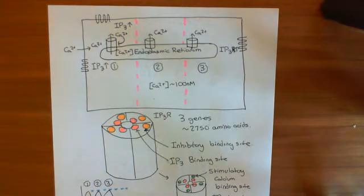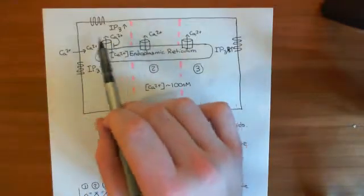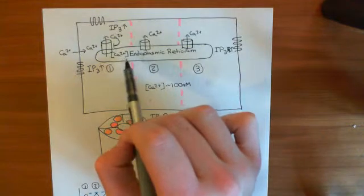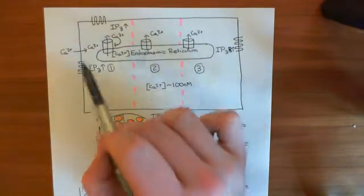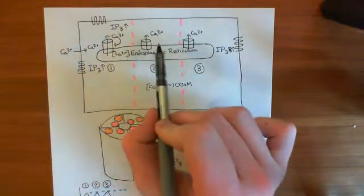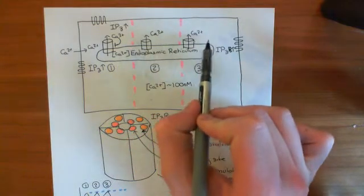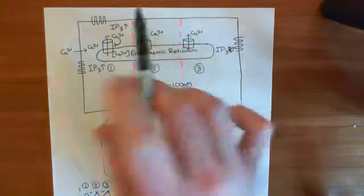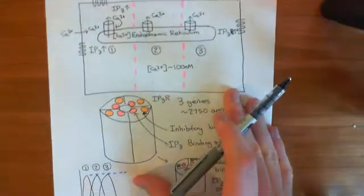Welcome to this next video on calcium waves. What we've seen so far is that calcium release from one portion of the intracellular stores, i.e. in one of these portions of the cell, triggers calcium release from the next portion, which triggers calcium release from the next portion. So you get this propagation of this calcium wave.